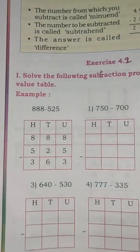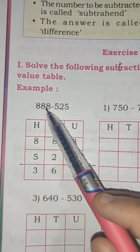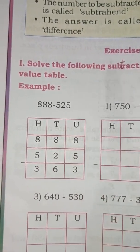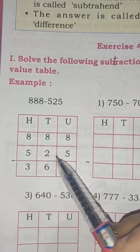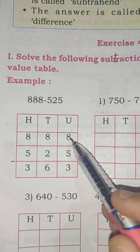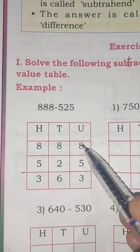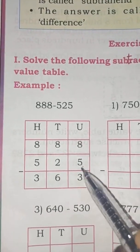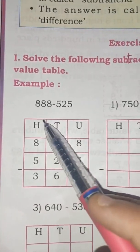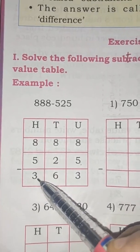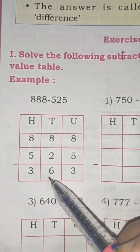Here is an example which is already done: 888 minus 525. First we have to start subtracting numbers from the units place. So 8 minus 5 is 3. Next, come to the tens place: 8 minus 2 is 6. Next, come to the hundreds place: 8 minus 5 is 3. So the difference between these two numbers is 363.